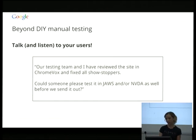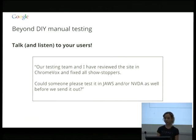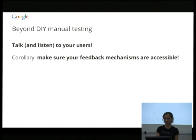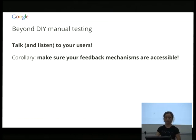Most importantly, before automated testing: talk to and listen to your users. This is an example of someone I work with saying, we've done our best to do manual accessibility testing ourselves and found a few bugs, but I really need someone who is a full-time screen reader user to check this out and make sure we haven't missed anything. Also, make sure your feedback mechanisms are accessible — it's really frustrating to find an accessibility problem and then find you can't even report it. And once you get feedback, really listen to it and make sure you're actually fixing things.